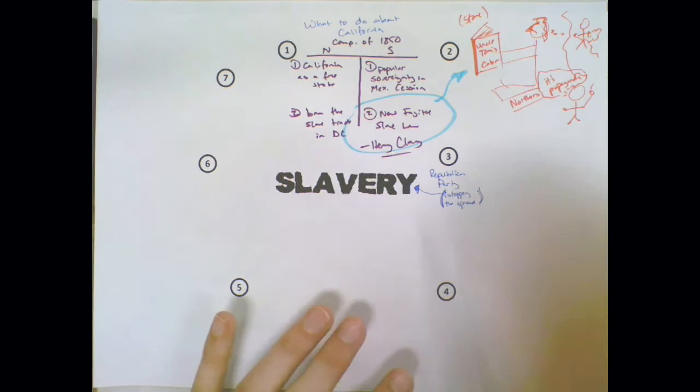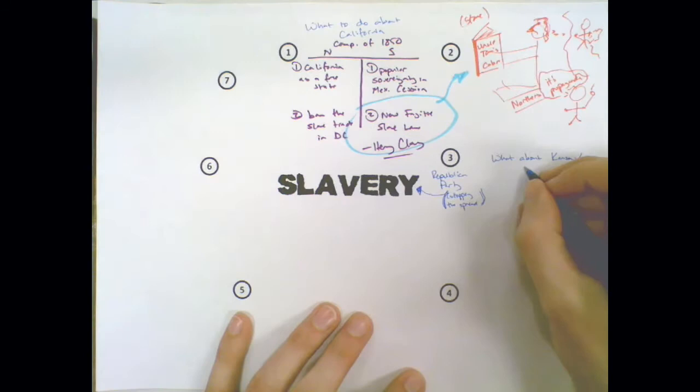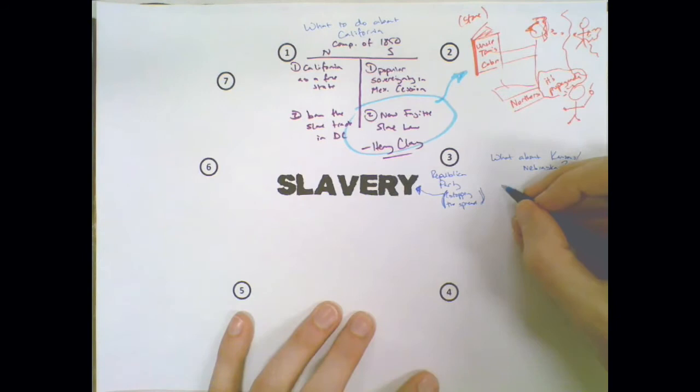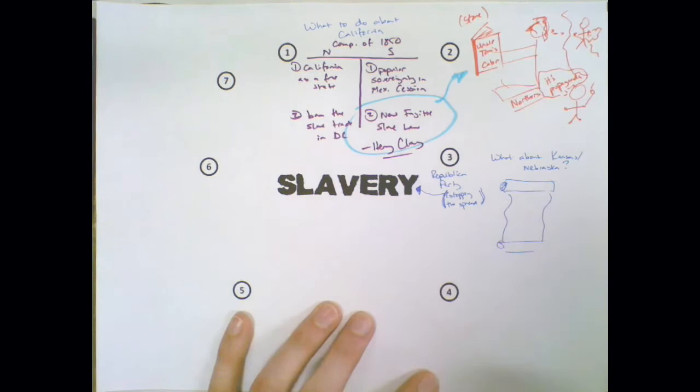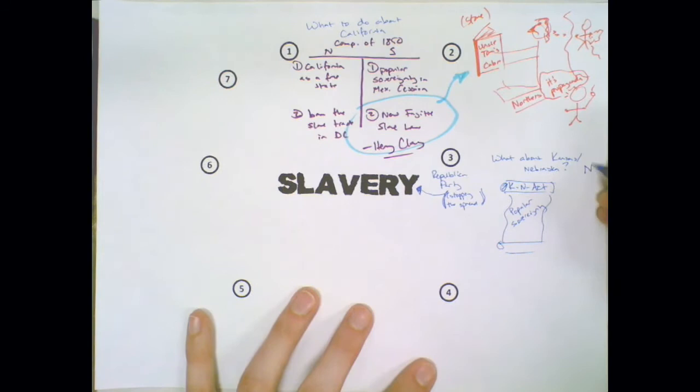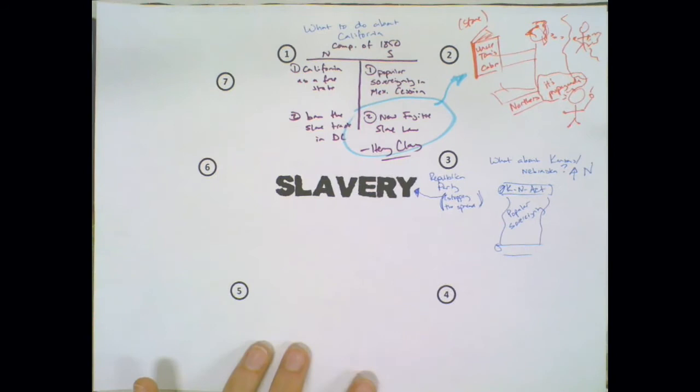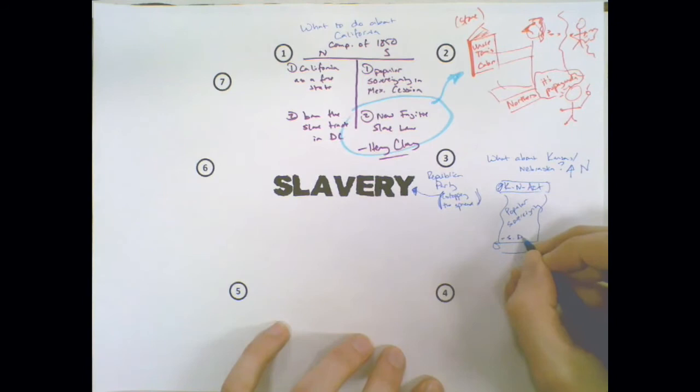Next question that we have to solve as a nation is, what about Kansas and Nebraska? Because Kansas and Nebraska are now also ready to become states. Senator Stephen Douglas comes up with a plan, and his plan is called the Kansas-Nebraska Act. The Kansas-Nebraska Act allowed for popular sovereignty in the territories. Kansas and Nebraska are both north of the Missouri Compromise line, so in reality they should both be considered free states, but the Southerners aren't being very nice about it, so we're having to compromise.